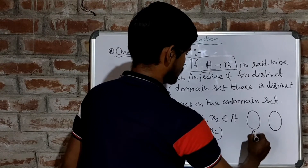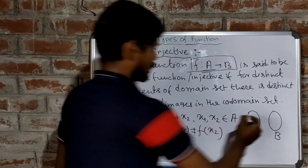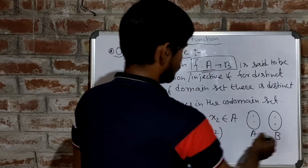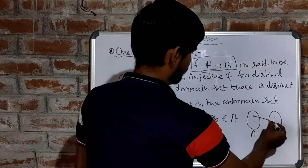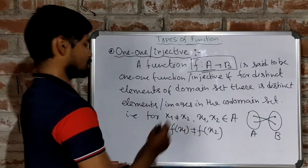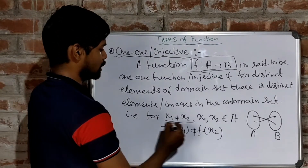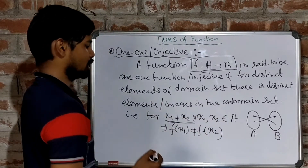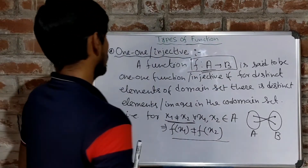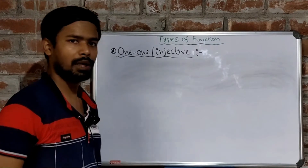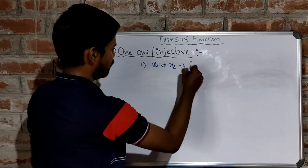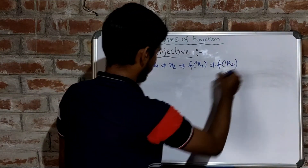Suppose this is the domain set and this is the codomain set. If there are two distinct elements in the domain set and for these two distinct elements you are getting two distinct images, suppose this element maps with this element and this element maps with this element — if x₁ ≠ x₂ for all x₁, x₂ belonging to the domain set, and we have f(x₁) ≠ f(x₂), then we say that the function f is a one-one function or injective. To be a one-one function, either for x₁ ≠ x₂ this implies f(x₁) ≠ f(x₂), or equivalently f(x₁) ≠ f(x₂) implies x₁ ≠ x₂. For either case, we say that f is one-one.